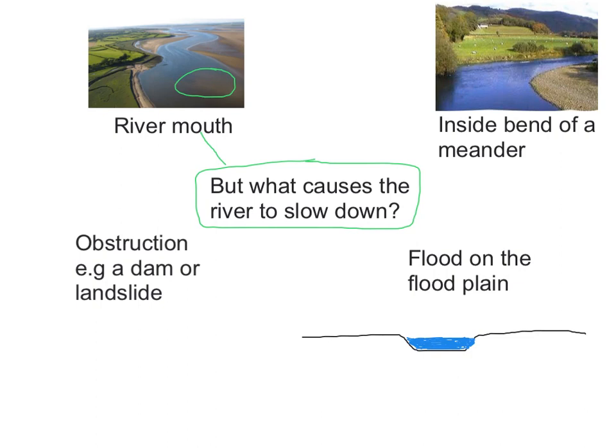The second reason is to do with the location on a meander. On the inside bend of a meander there is naturally a slower flow. As the river slows down as it goes around the bend due to friction, the river will lose energy and deposit what it's carrying. And you can see in this photograph a nice point bar or slip-off slope full of deposited sediment.